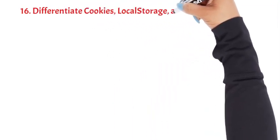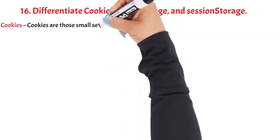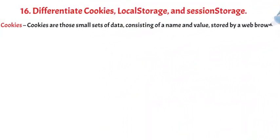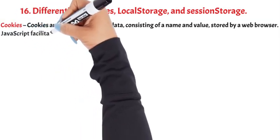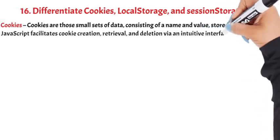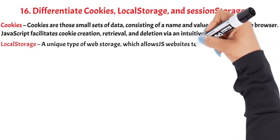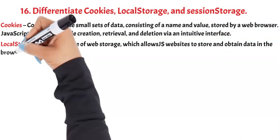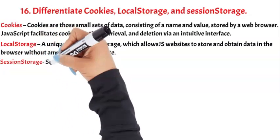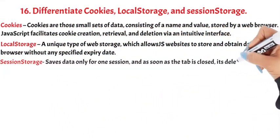Question 16: Differentiate cookies, local storage, and session storage. Cookies are small sets of data consisting of a name and value stored by a web browser; JavaScript facilitates cookie creation, retrieval, and deletion via an intuitive interface. Local storage is a unique type of web storage that allows websites to store and obtain data in the browser without any specified expiry date. Session storage saves data only for one session, and as soon as the tab is closed, it is deleted.